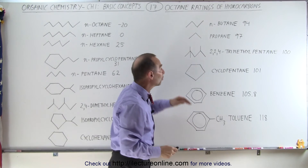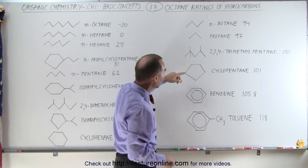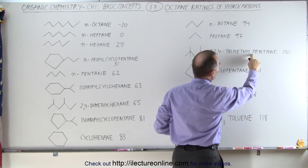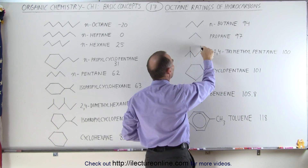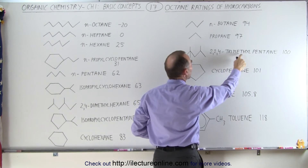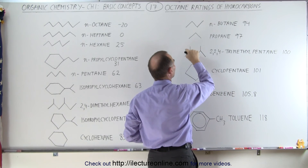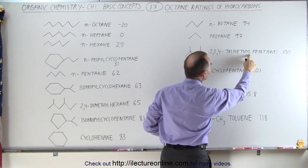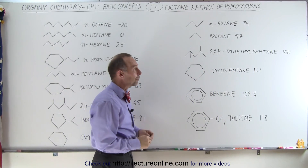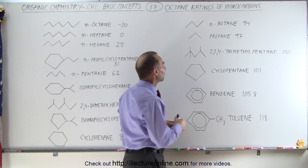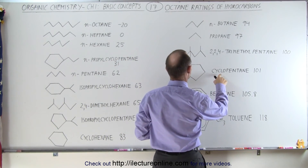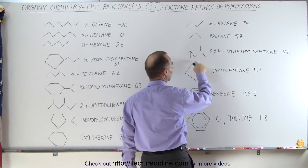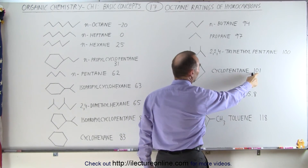Now the next one is one that is common in gasoline. It has one, two, three, four, five carbons in a linear structure, so there we see the word pentane. It has three attachments — they're all methyls — so trimethyl, and they're attached: two of them at the second carbon, one of them at the fourth carbon, so 2,2,4-trimethyl pentane. You can see that the octane rating there is 100. Here we have cyclopentane because it has five carbons, and that has an octane rating of 101.